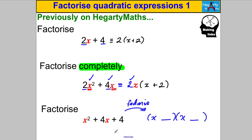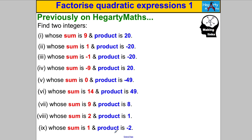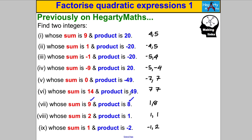One other skill I need you absolutely on top of for this video is sums and products — finding two numbers that sum to something and have a product of something else. Please pause the video and double-check you can answer all these questions super quickly. Make sure you go back to the sums and products skill if you're not sure, and practice a lot — this is going to be crucial.